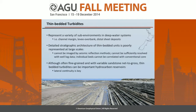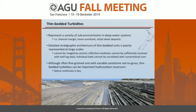The deep-water deposits we're interested in are thin-bedded turbidites. The importance of studying these is to provide outcrop analogs. Thin-bedded turbidites represent a variety of sub-environments in deep-water systems, and yet the detailed stratigraphic architecture of thin-bedded turbidites is actually poorly represented, mostly due to issues of resolution with large subsurface data sets. Thin beds cannot be imaged by seismic reflection methods or well-resolved with well-log data, and individual beds can't be correlated with just conventional core.